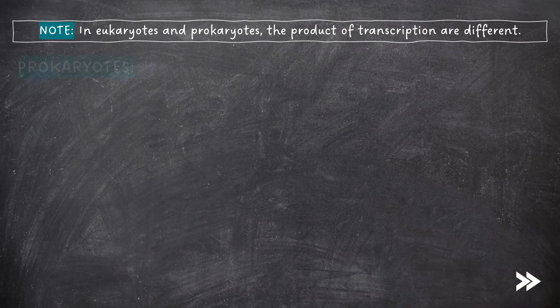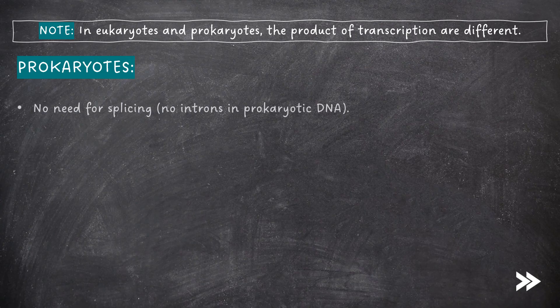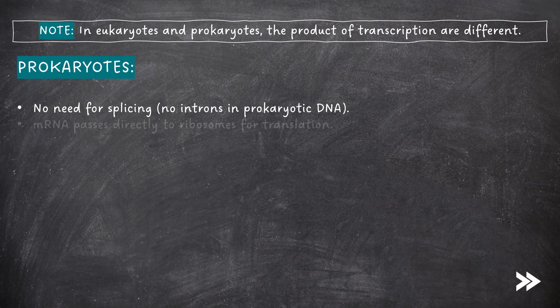In prokaryotes, on the other hand, there is no need for gene splicing as introns don't exist in prokaryotic DNA. The mRNA passes directly to the ribosomes for translation.